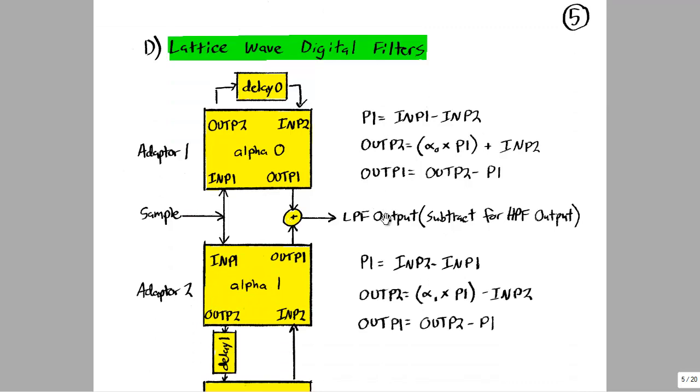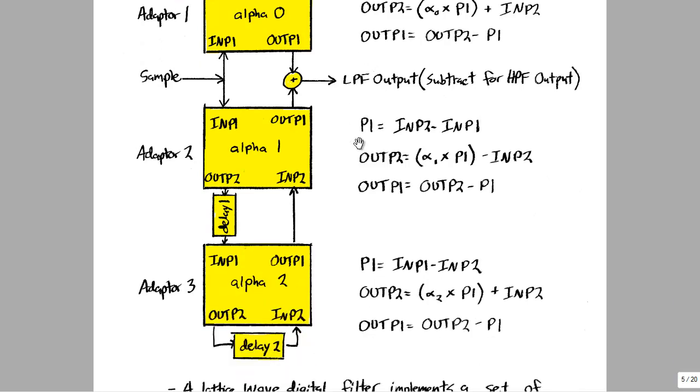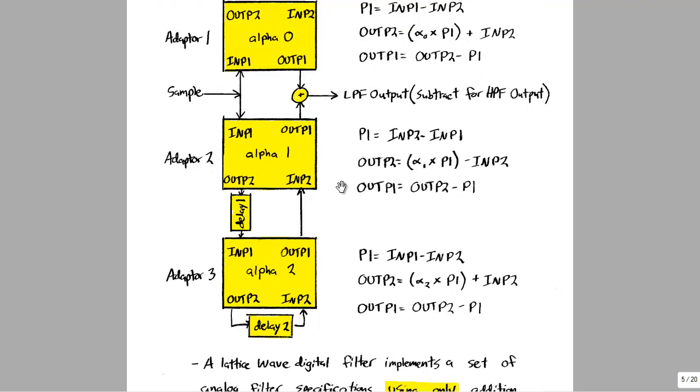The specific type of filter we're designing is called a lattice wave digital filter. This is a really neat design—it's an infinite impulse response filter, which is normally unstable, but in this case the design is relatively stable, making implementation relatively easy.